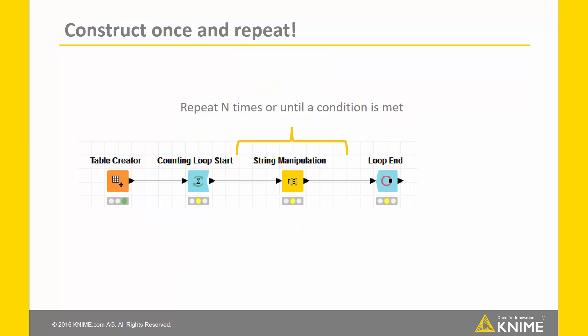This is an example for a simple workflow. It starts with the counting loop start. The string manipulation is our loop body. The inside is repeated n times until an end condition is met. In this case, the end condition are the n times and after n iterations this loop will stop. So, to repeat, it is really important to have a loop start and a loop end node.